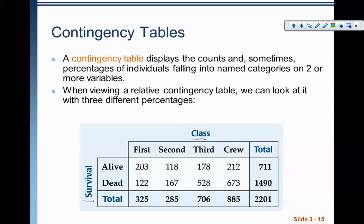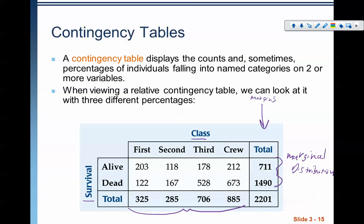This is a regular contingency table. We can also make a relative contingency table where we look at these as percents. The totals over here in the rows we call the margins, and if we're looking at this whole side, we call that a marginal distribution. A marginal distribution of survival would be 325 out of 2201, 285 out of 2201, and so on. A marginal distribution is simply a distribution of the margins — all of the numbers in the margins.